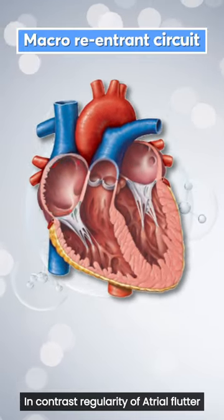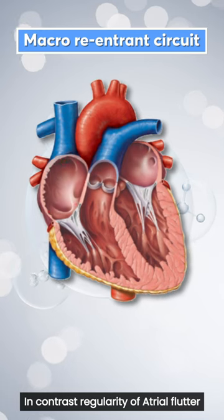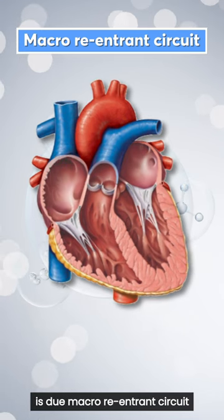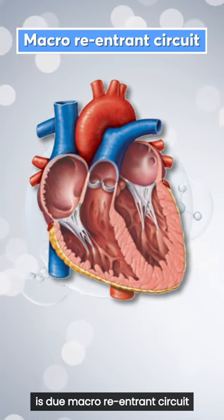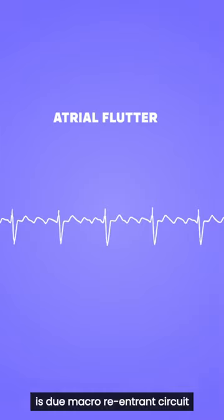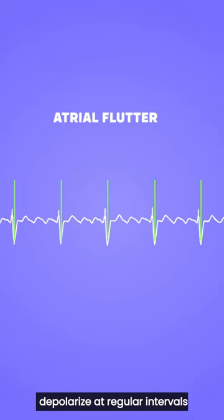In contrast, the regularity of atrial flutter is due to a macro re-entrant circuit, which leads the ventricles to depolarize at regular intervals.